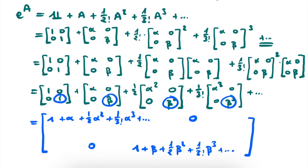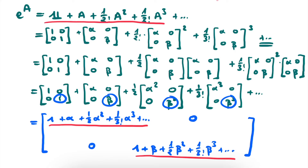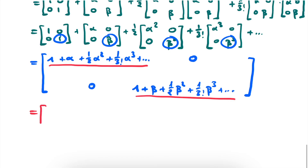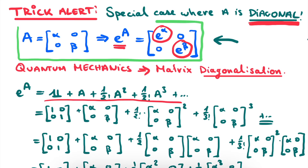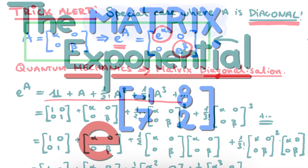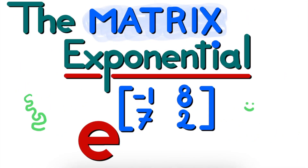What we see now is that for these diagonal elements we actually have the identical series as the Taylor expansion of the exponential, but now simply with the elements alpha and beta. So we can rewrite this matrix as e to the power of alpha, 0, 0, e to the power of beta. And there we go — we have proven our property that for diagonal matrices the matrix exponential reduces to taking the exponential of the diagonal elements. This already brings us to the end of this video, and I hope that you're now more familiar with how to calculate the matrix exponential and that you do not find it so scary anymore.